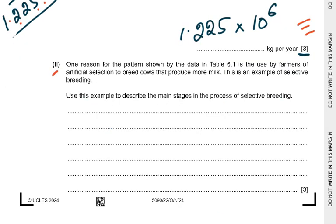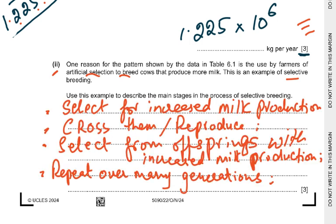Coming to part two: one reason for the pattern shown in table 6.1 is the use by farmers of artificial selection to breed cows to produce more milk. This is an example of selective breeding. Use this example to describe the main stages in the process of selective breeding. You select for increased milk production — choose the female with high milk production and the male with more female relatives that produce more milk. You cross them, then select from the offspring those with increased milk production, and repeat this over many generations to finally get high milk-yielding cows.